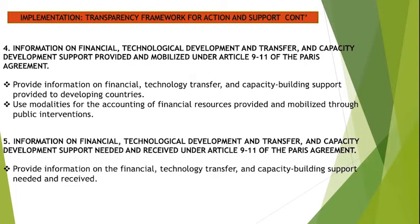There is also information on finance, technology development and transfer, and capacity development support needed and received under Articles 9 to 11 of the Paris Agreement. This is information on finance, technology transfer, capacity building support needed by developing countries and received. It is important that this information is available so that the process can know how much support is needed, how much has been received, whether it is sufficient, how efficiently it is used, and what barriers exist and how they can be tackled.